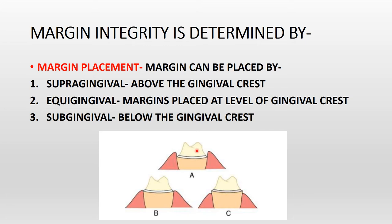Sub-gingival margins are mostly avoided unless clearly indicated. When placing sub-gingival margins, place them at least 2 mm above the alveolar crest so that the biologic width is not encroached. Indications for sub-gingival margin placement include: caries, erosion, or existing restoration extending sub-gingivally; aesthetic requirements; need for additional retention on a short crown; root sensitivity; and proximal contact extending to the gingival crest.